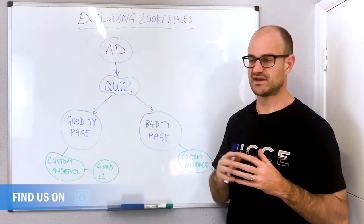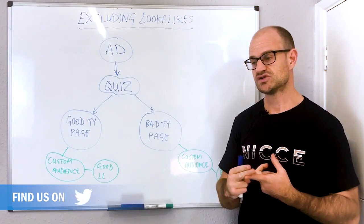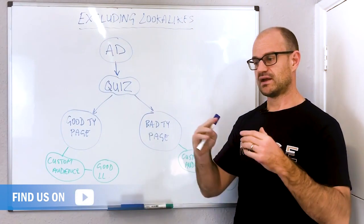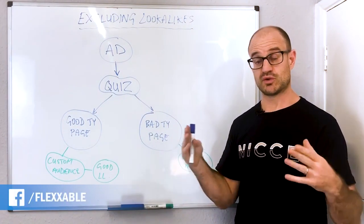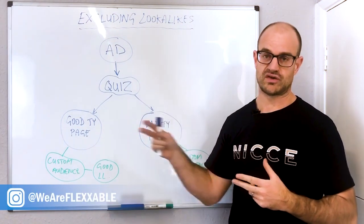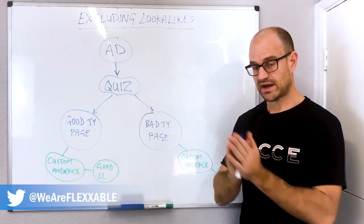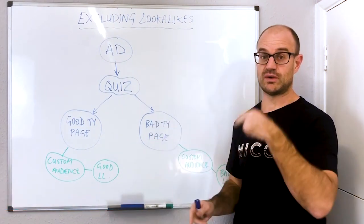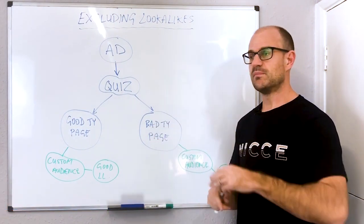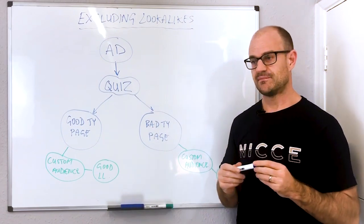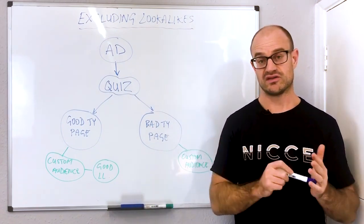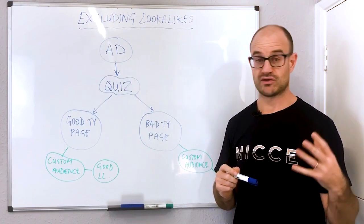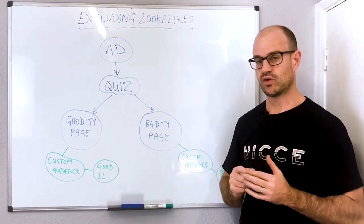So let's say 300 people hit that thank-you page - you can then create an audience that Facebook knows is similar to those 300 people. When you have that similar audience, you can start showing new ads to those people because you know they're likely to convert and you're likely to get a good ROI from that particular audience.